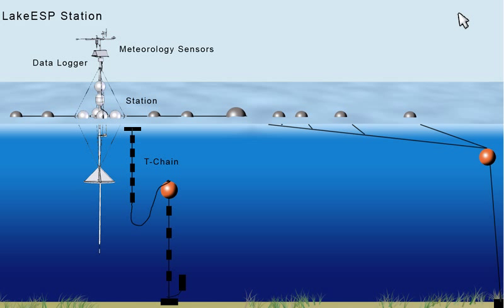Components of the Lake ESP system include above-surface meteorology sensors, below-surface T-chain sensors, a data logger, solar power, and a stable floating station.